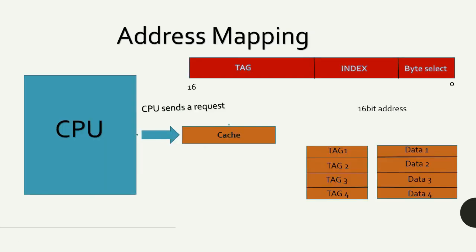Coming to address mapping, the CPU sends a request to either write data or read data from the cache. The cache is organized into cache blocks, and it can have a number of cache blocks depending on the size of the cache. Each cache block can hold different sizes of data, such as one byte, two bytes, or four bytes.